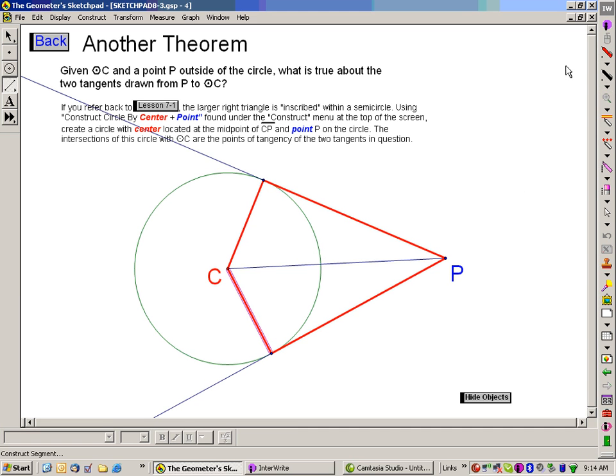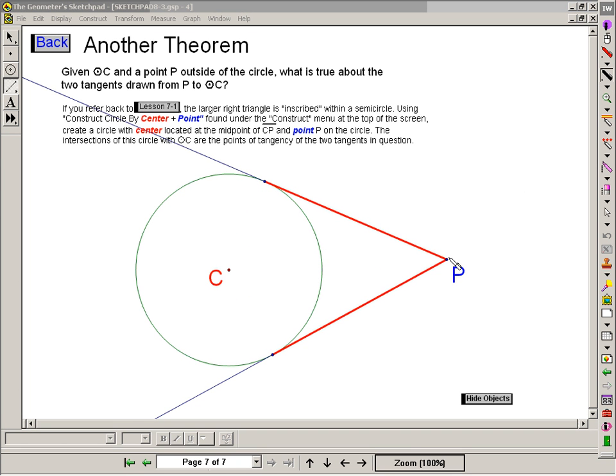So the idea of this theorem is, given a point outside of a circle, we can construct two tangents, and the tangents are always congruent. How do we apply that theorem? Here we go.